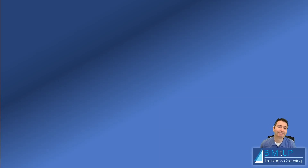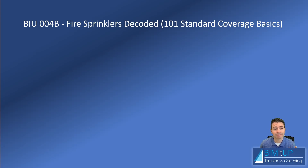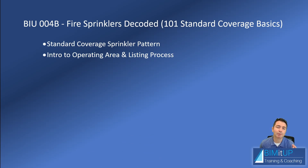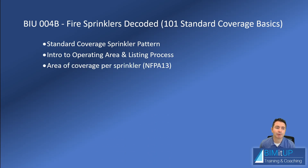Hi everyone, Alex with BIM it Up here. Today we're going to be talking about fire sprinklers. We're introducing our new series, Fire Sprinklers Decoded, and in this particular episode we're going to be focusing on standard coverage sprinklers. I'll give you a quick overview on the sprinkler pattern for standard coverage sprinklers and an introduction on operating area and the listing process, which is going to clarify a couple of things. We'll also do a quick overview on the area of coverage per sprinkler per NFPA 13, that's National Fire Protection Association volume 13.